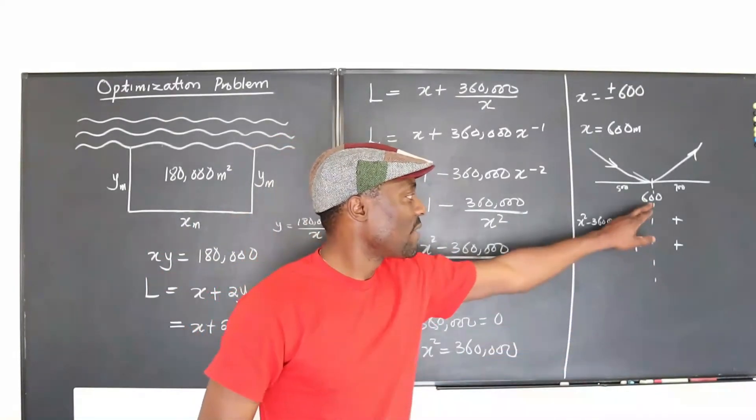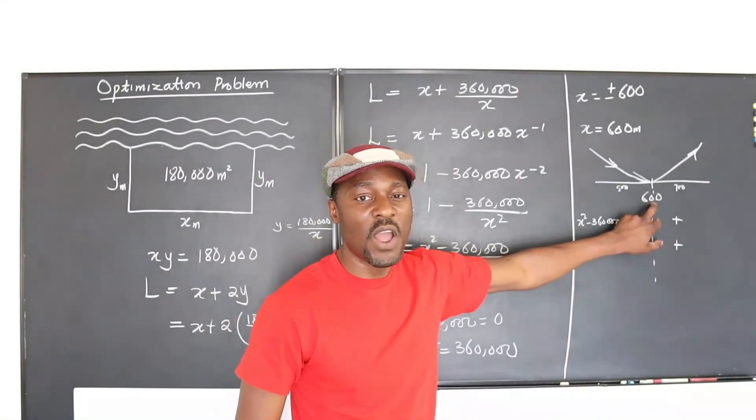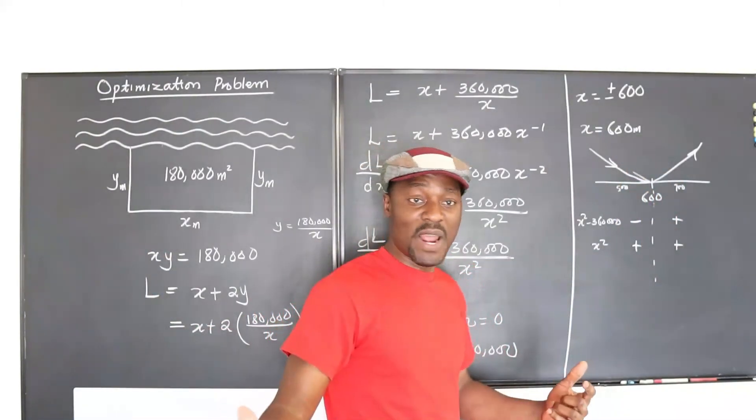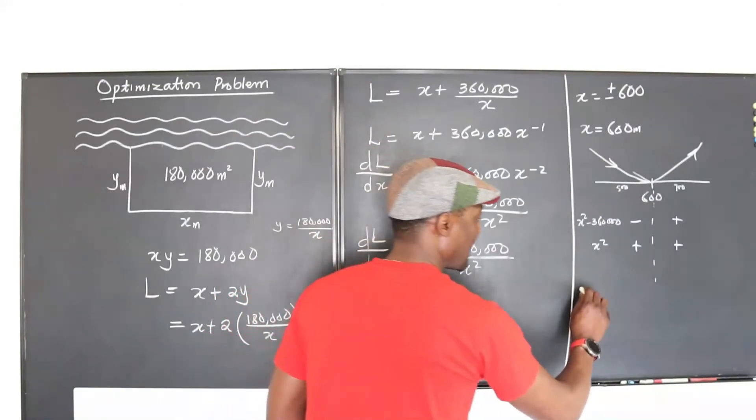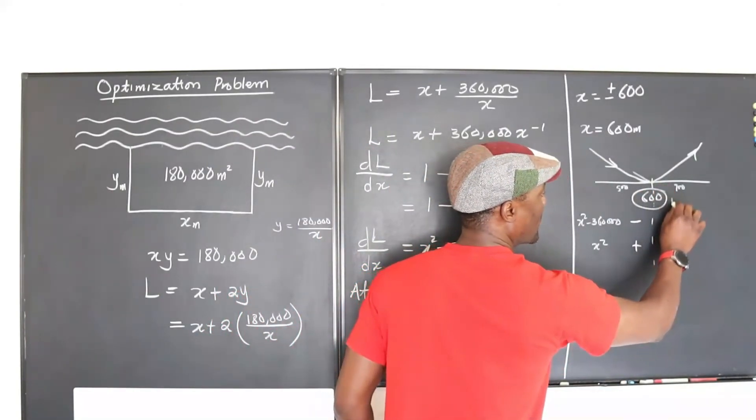So we have confirmed that x equals 600 is the minimum value of x that will optimize this rectangle. So this clearly confirms a minimum point.